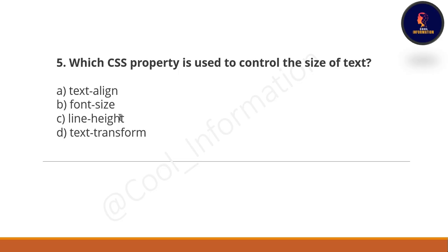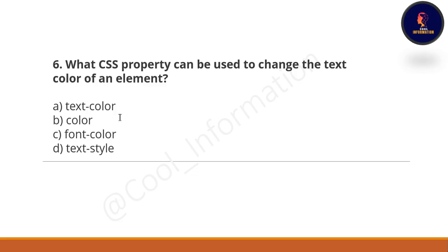Which CSS property is used to control the size of text? Option A: text-align. Option B: font-size. Option C: line-height. Option D: text-transform. It's a very simple but important question — please subscribe the channel, like the videos, and share them with your class group and friends. The correct option is option B, which is font-size.